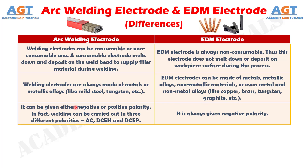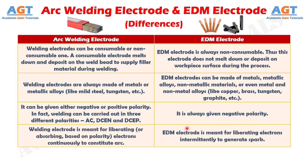Number 3: arc welding electrodes can be given either negative or positive polarity. In fact, welding can be carried out in three different polarities: AC, DCEN, and DCEP, whereas electric discharge machining electrode is always given negative polarity.